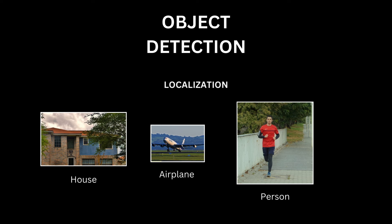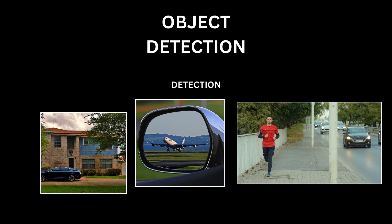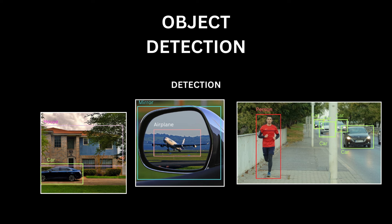Then there is the task of image localization, which demands a little bit more from us. It requires us to locate the instance of an object category in an image using a tight box centered on the instance — so essentially, classification with a single label, plus locating the object. Now on to object detection, which further demands more: it requires us to locate all instances of all object classes in an image. These classes, just like classification, come from a predefined set of categories present in our dataset.